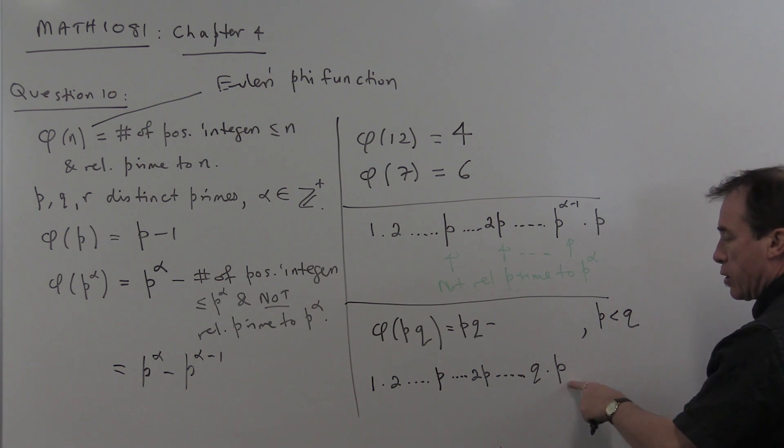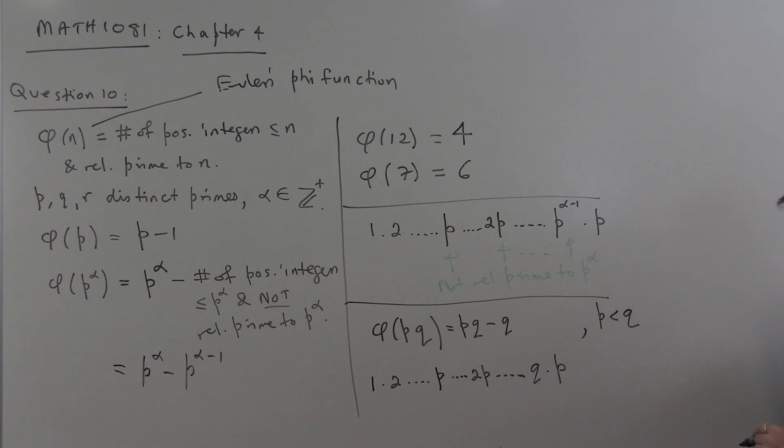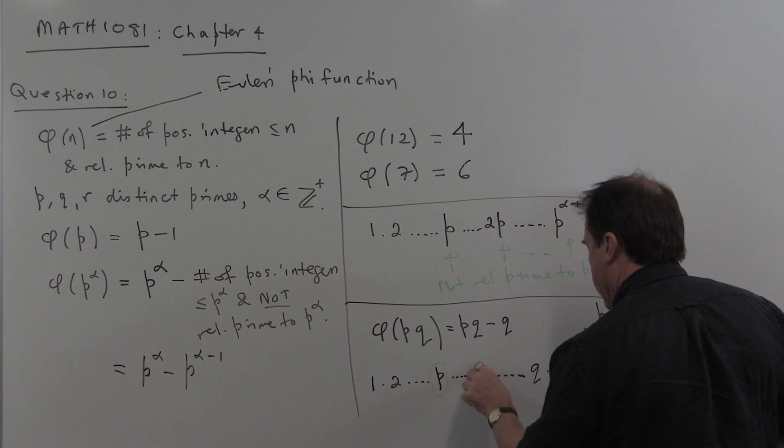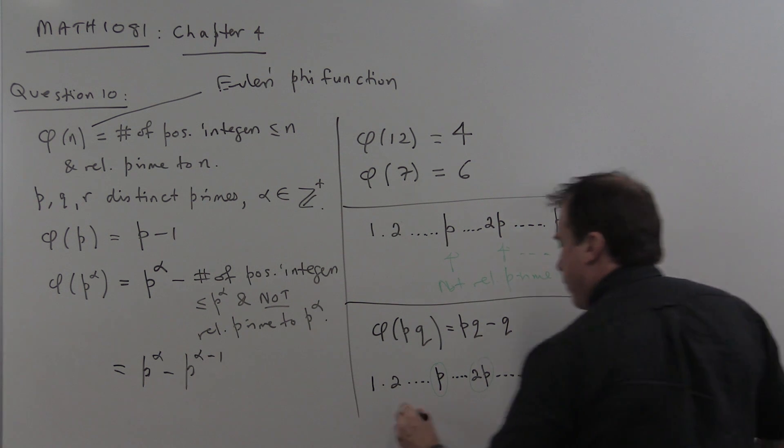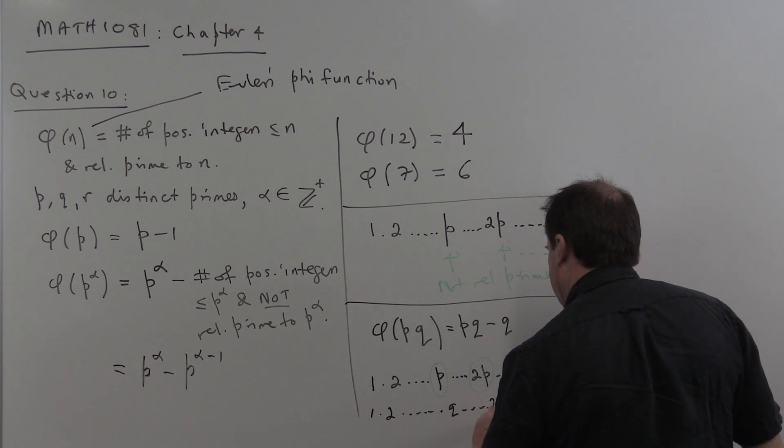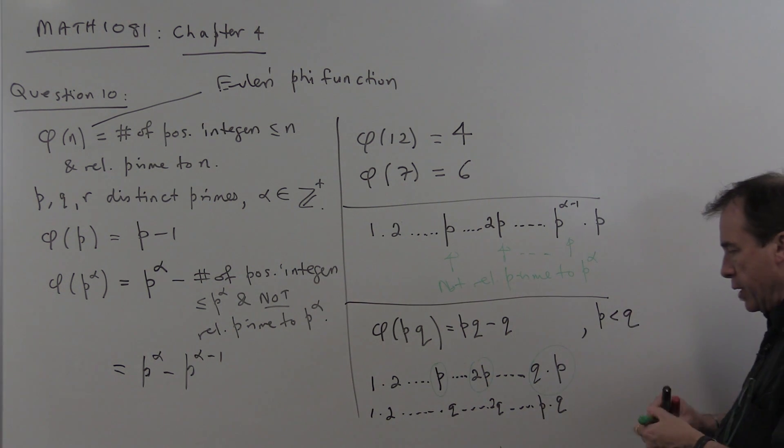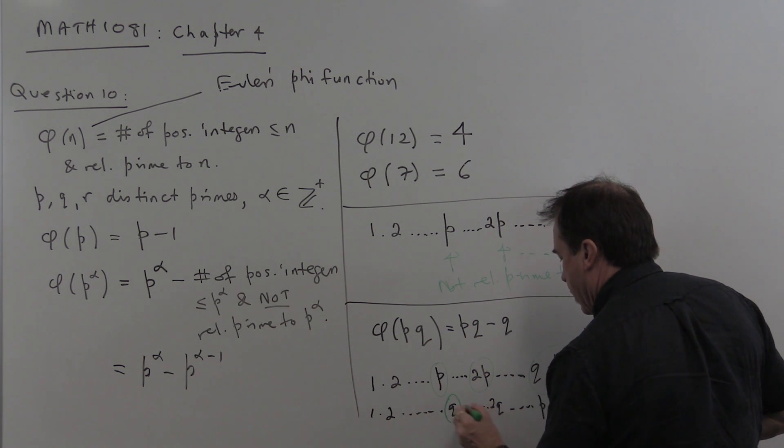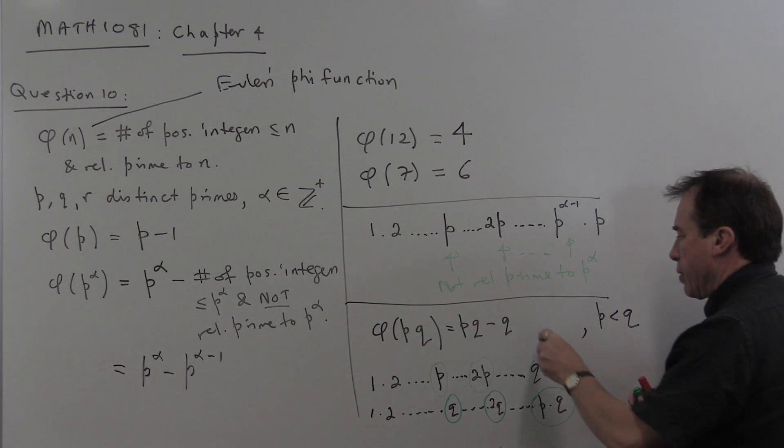So using the same idea as I did here, this is going to be PQ minus, I'm going to get Q lots of P, so there'll be Q numbers in this list that are not relatively primed to PQ. On the other hand, I could have done the same with the Q. So these are the numbers here, this one, this one, and this one. These are not relatively primed to PQ. Could have done the same for Q. So I could have said, I go through this list and I hit the number Q and then I'll hit 2Q and eventually I'm going to get P lots of Q. And so the number of numbers in this list that are not relatively primed to PQ are going to be these ones and there are going to be P of those. And so again, going back to here, I'm going to subtract off P.